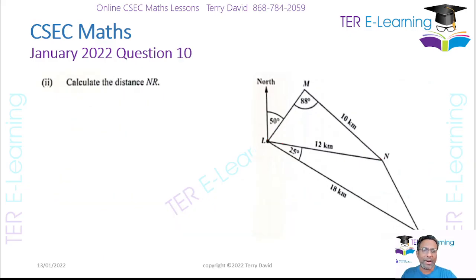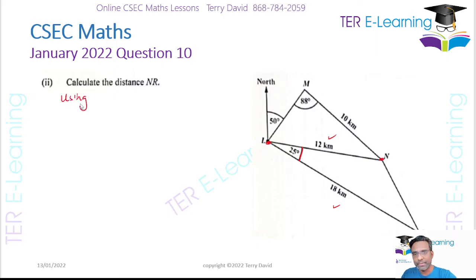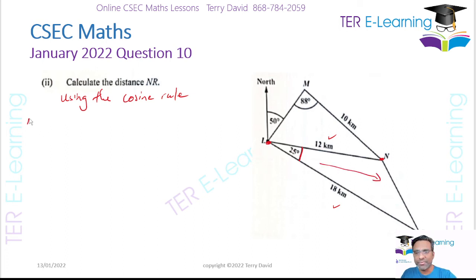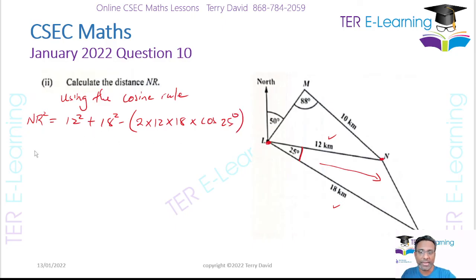The next part wants us to find NR. Looking at triangle L, N, and R — it's not a right-angle triangle, but I have an angle and the two sides on either side of that angle. That's the condition for using the cosine rule. So using the cosine rule: NR² = 12² + 18² − 2 × 12 × 18 × cosine of 25 degrees.